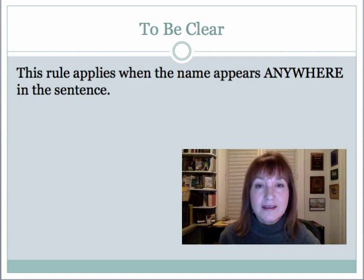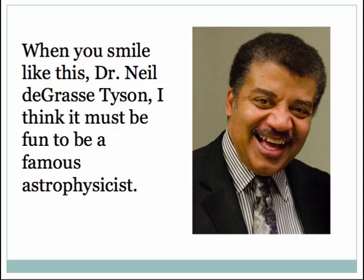To be clear, this rule applies when the name appears anywhere in the sentence — it can be at the beginning, in the middle, or at the end. Let's look at another example: "When you smile like this, Dr. Neil deGrasse Tyson, I think it must be fun to be a famous astrophysicist." You'll see that we're speaking directly to the famous astrophysicist, addressing him by his name, and that there are commas on either side of his name.